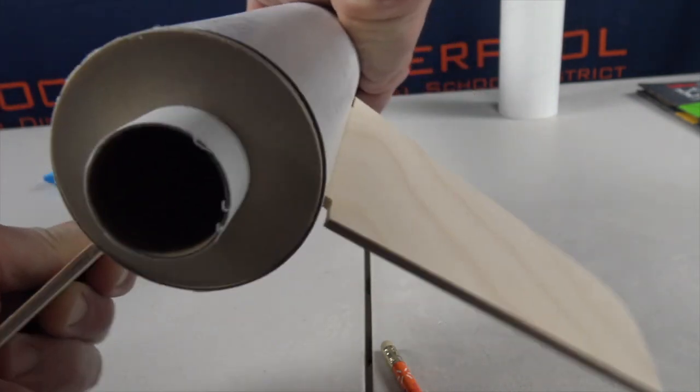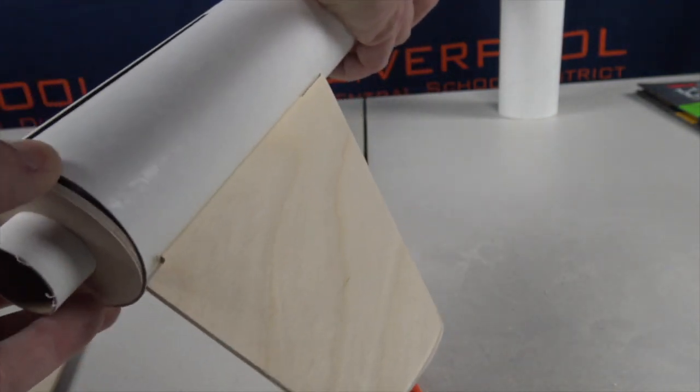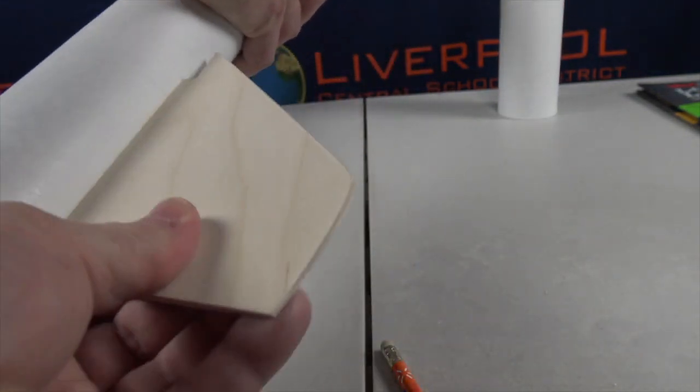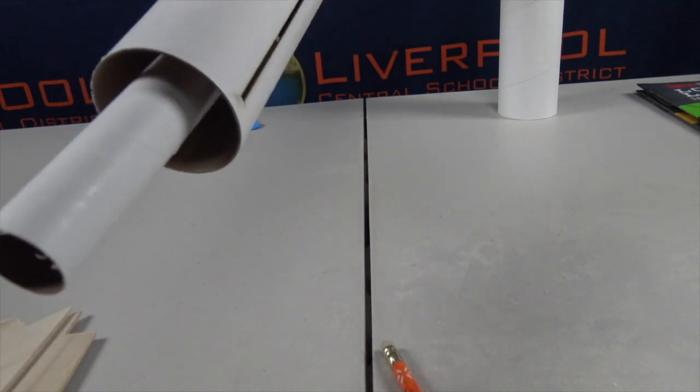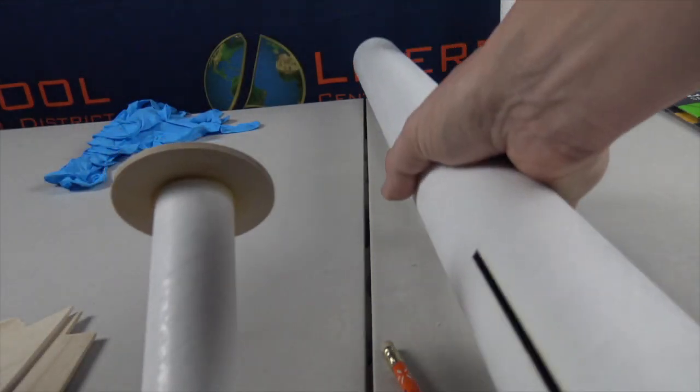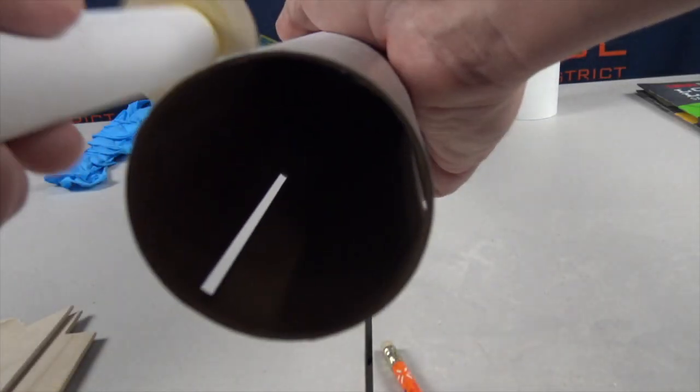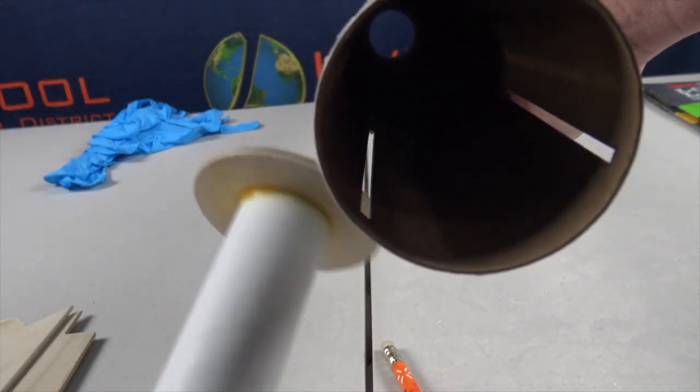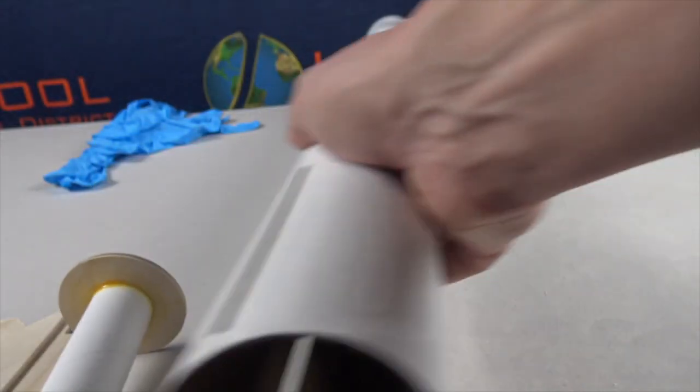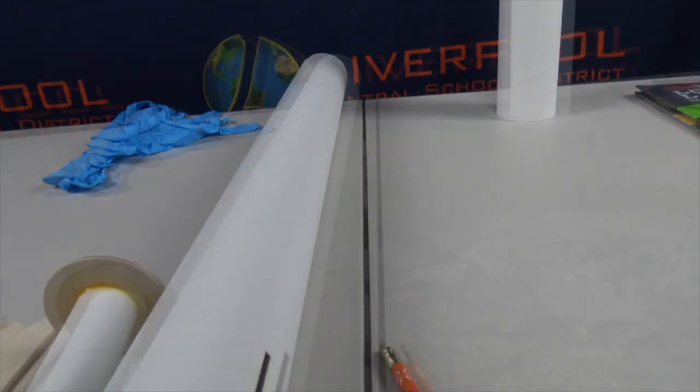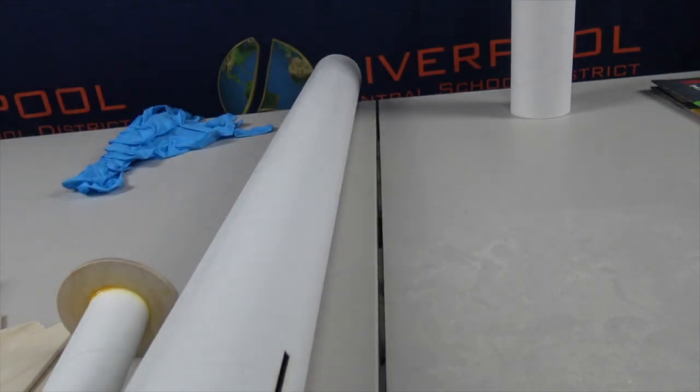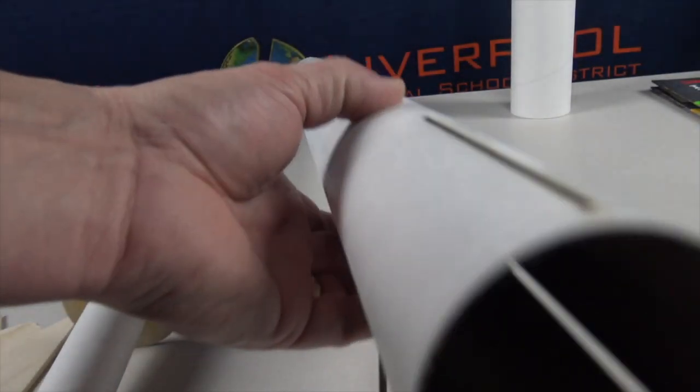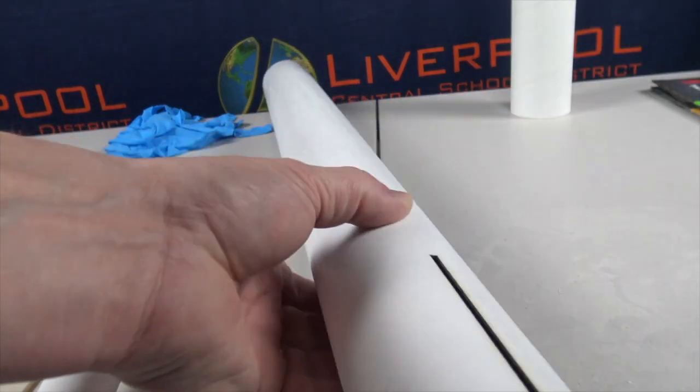So let me take this back apart, take our ring off, pull that one out, take our ring off, pull our assembly out. Our first step is to get some glue up in here and get this ring slid up in there as well. So let me start looking around trying to find the best tool to use to get glue up inside our tube above those fins.